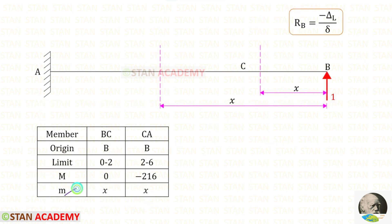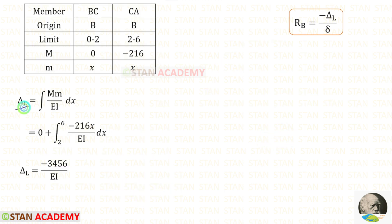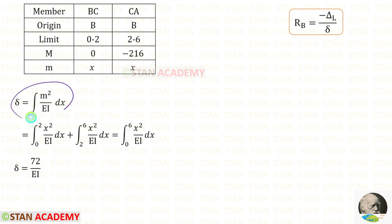Now let us find the moment m-bar. For that we have to remove all of the loads from the beam and apply a unit load in the direction of RB. Up to both sections we have only the unit load, and about both sections it is acting in the anti-clockwise direction, so it will be positive. The distance is x, so 1 times x gives x. Now let us find delta_L using the formula: integration of M·m-bar upon EI dx. Then let us find delta using the formula: integration of m-bar squared upon EI dx, which gives 72 upon EI.